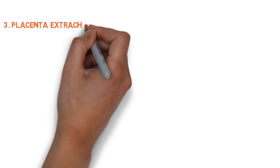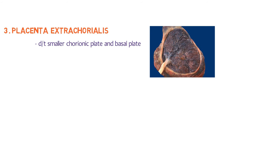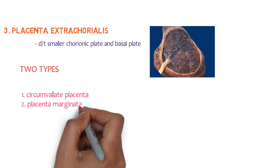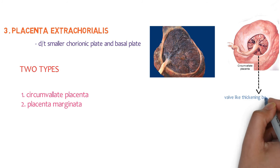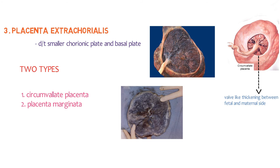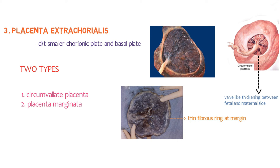Placenta extrachorialis: developmentally, this type of placenta is due to a smaller chorionic plate than the basal plate. Recurrent marginal hemorrhages occur, as diagnosed on serial USG. The chorionic plate does not extend to the placental margin; the membranes are folded and rolled back upon themselves to form a ring, leaving a rim of bare placental tissue — the extrachorial portion. Morphologically, there are two types: circumvillate placenta and placenta marginata. In circumvillate placenta, there is a valve-like thickening between the fetal and maternal side, with the fetal surface divided into a central depressed zone surrounded by a thickened white ring, and vessels radiating from the cord insertion as far as the ring. In placenta marginata, a thin fibrous ring is present at the margin of the chorionic plate where fetal vessels appear to terminate.